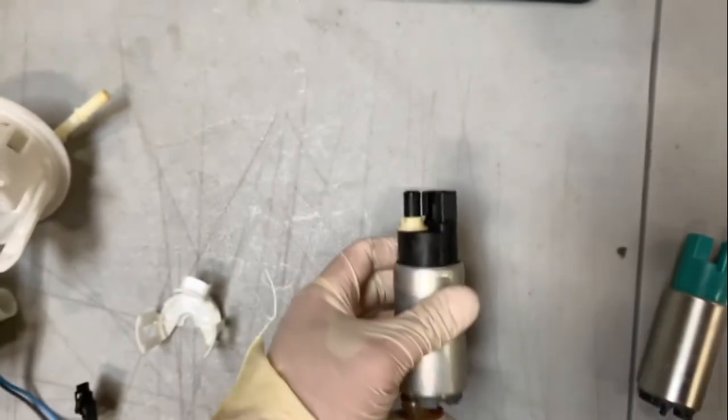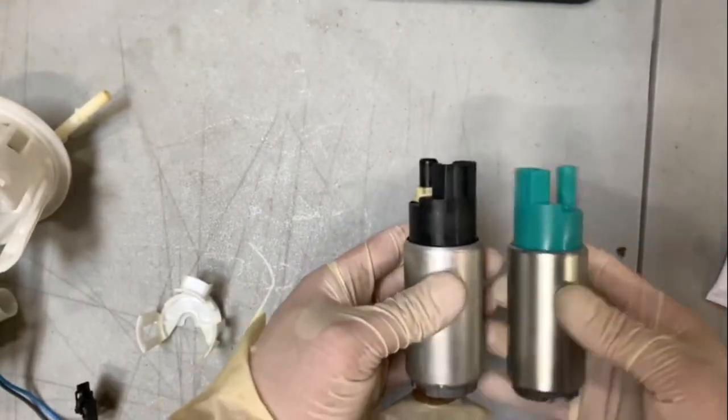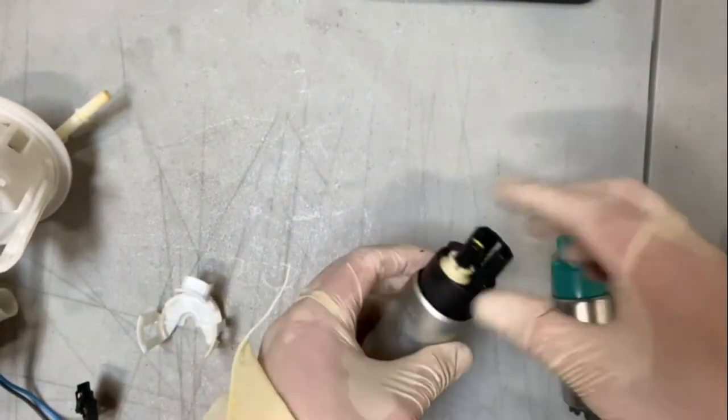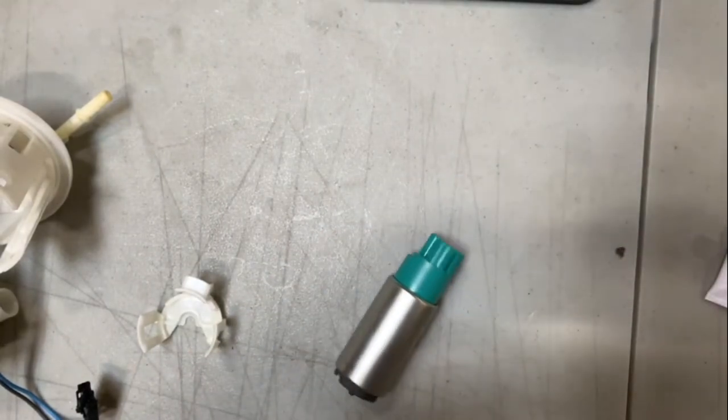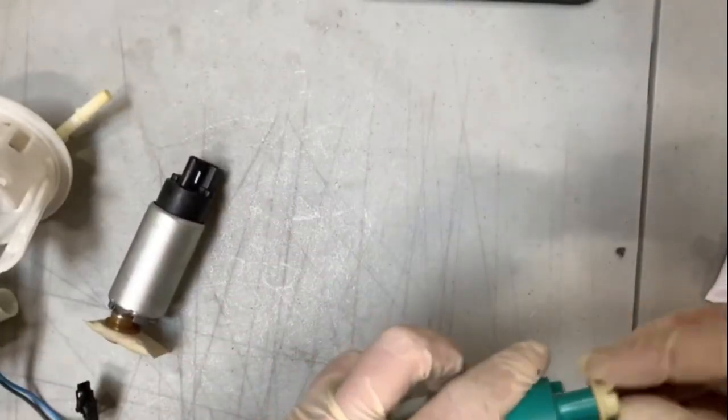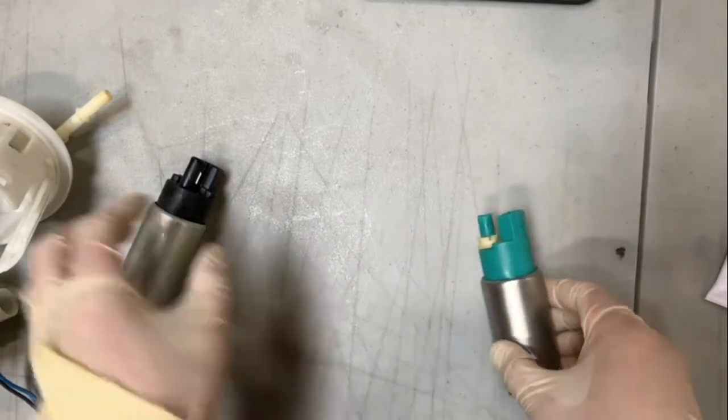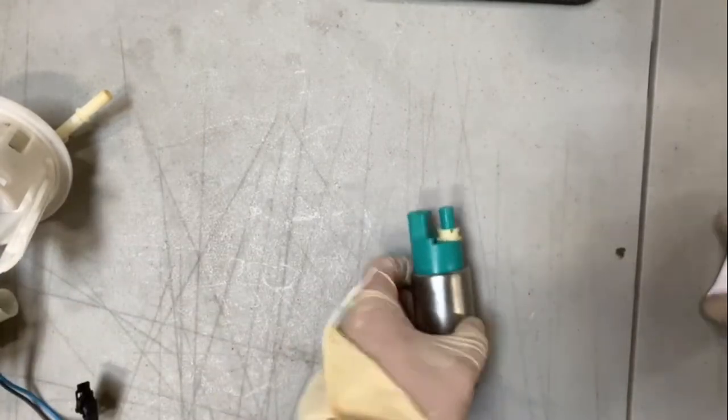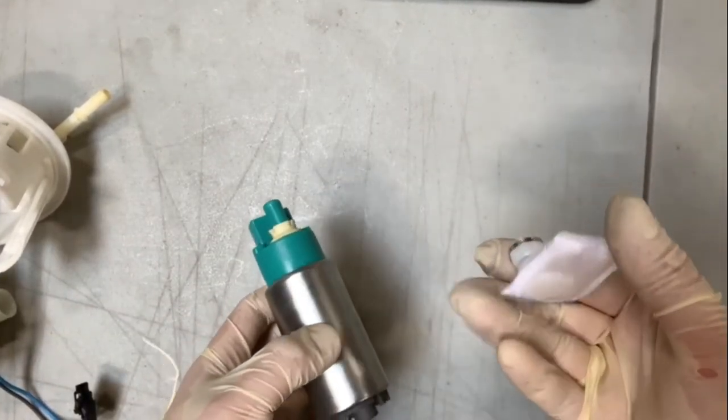This part is very important. Please remove the white spacer that is on top of the fuel pump outlet and put it on our pump. This is very important to ensure proper fuel pressure. We also include the exact OEM size strainer.